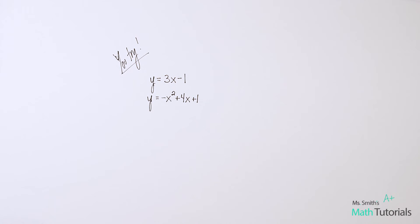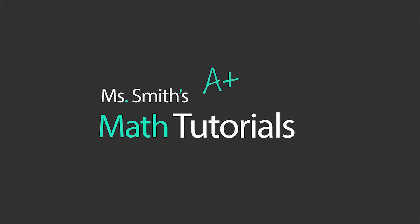Here's one for you guys to try on your own. I've given you a linear equation, y equals 3x minus 1. And a quadratic equation, y equals negative x squared plus 4x plus 1. Whether you want to do it algebraically, graphing it manually, or graphing it on the calculator. And I will tell you there are two for this one. What are the two intersecting points for these two equations? I will post the answer in the video description below. This has been Ms. Smith's Math Tutorials.